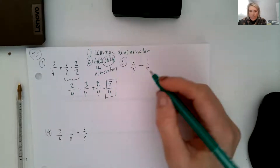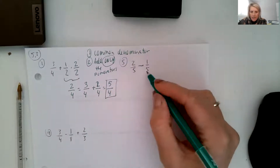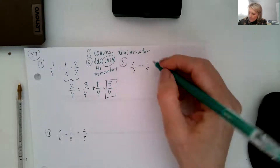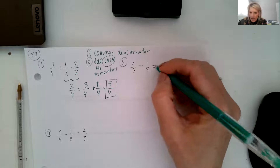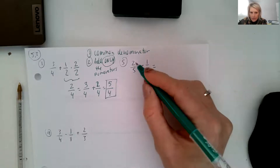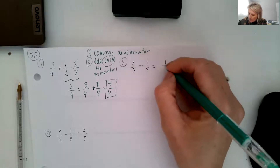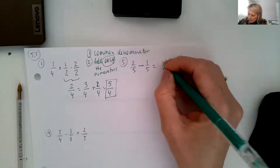Let's look at the second one. They already have a common denominator, so we can go ahead and subtract the numerators. Two minus one is one-fifth.